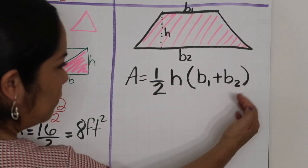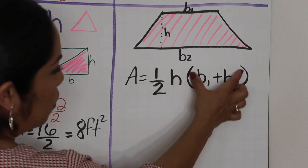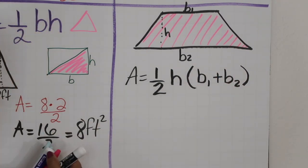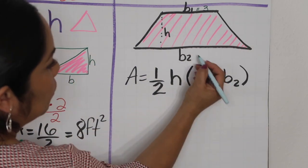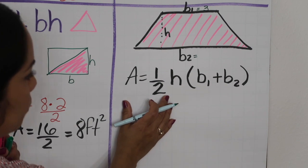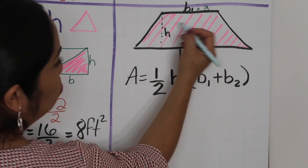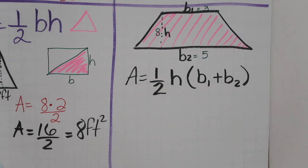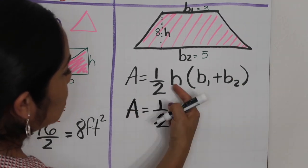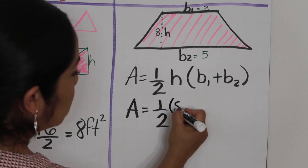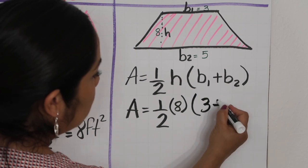Always remember the order of operations — I do the parentheses first. For example: B1 is 3, B2 is 5, and the height is 8. I'm using easy numbers so you can follow the process. Substituting into the formula: area equals 8 times the quantity 3 plus 5.